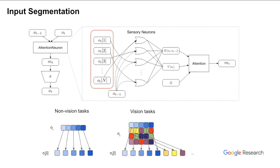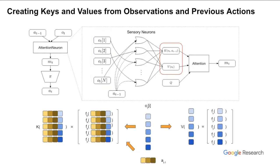The attention neuron can be viewed as a collection of sensory neurons. Given an observation, it segments the input into components, each of which is fed to an independent sensory neuron. For non-vision tasks where observations are 1D vectors, the segments are scalars. For vision tasks where observations are images, we use a sliding window to crop the input into non-overlapping patches. Each sensory neuron generates one row for the key and value matrices based on the input component and two shared functions fk and fv. fv accepts only the observation component, while fk concatenates the observation component with the action from the previous time step to generate one row for the key matrix.